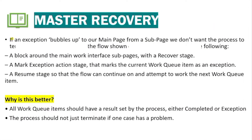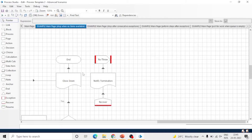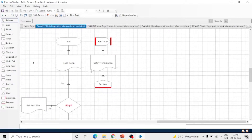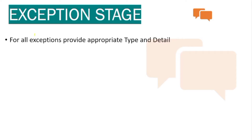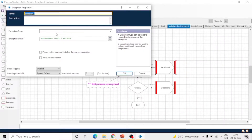The next one is master recovery. If an exception bubbles up to our main page from a sub-page, we don't want the process to terminate. So we use a master recovery on the main page. For better understanding, check our video on process templates.